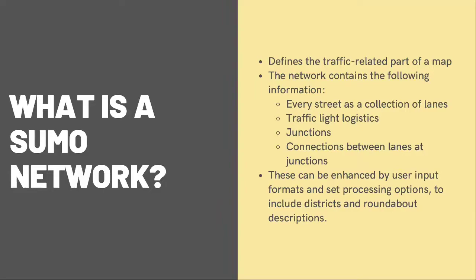In SUMO, a SUMO network file defines the traffic-related part of a map. The SUMO network file defines the roads and intersections that simulated vehicles run along or across. A SUMO network is basically a directed graph, and like a directed graph, the SUMO network consists of nodes or vertices and edges. The nodes and vertices represent intersections, called junctions in SUMO, and the edges represent the roads or streets, and they are unidirectional.